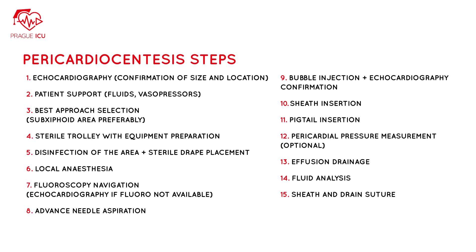The pericardiocentesis steps are as follows: first, echocardiography for confirmation of size and location of the effusion; patient support with fluids or vasopressors; best approach selection — subxiphoid area preferably; sterile trolley with equipment preparation; disinfection of the area and sterile drape placement; local anesthesia; fluoroscopy navigation or echocardiography if fluoro is not available; needle advancement with aspiration; bubble injection and echocardiography confirmation; sheath insertion; pigtail insertion; pericardial pressure measurement (optional); effusion drainage; fluid analysis; and sheath and drain suture.